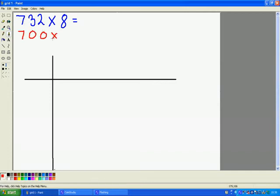So 700 multiplied by 8 is a lot easier to do. So 7 times 8 is 56, so 700 times 8 is 5,600. So it's 100 times bigger.